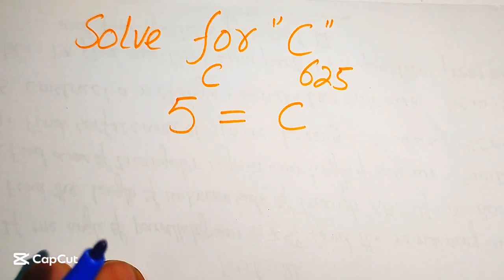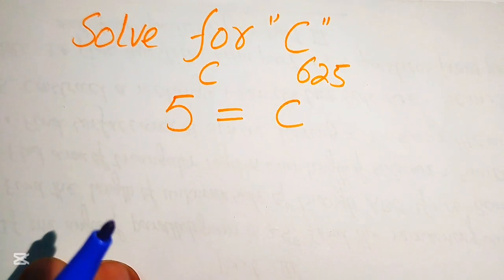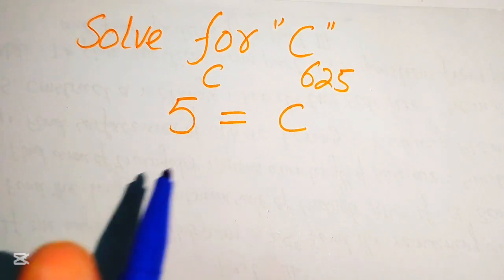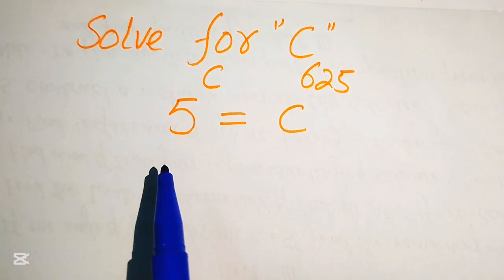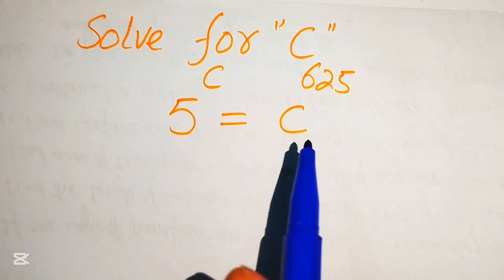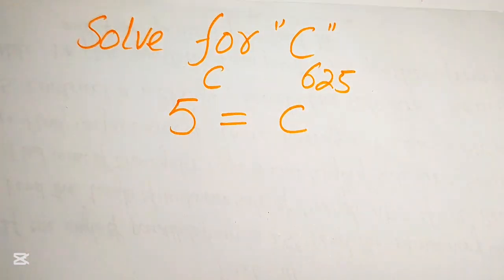Hello everyone, welcome to solve this nice math algebra problem. Here we have 5 to the power of c equals to c to the power of 625, and we solve this problem for the values of c.